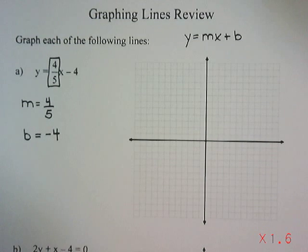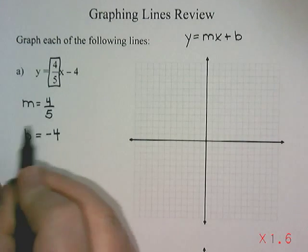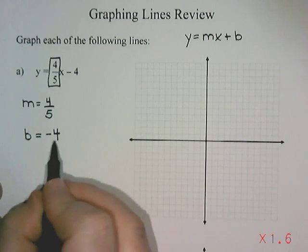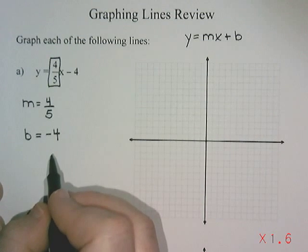So there are many different methods for graphing. You can use a table of values, you can use x and y-intercepts, but the one I like the best is using the slope and the y-intercept to find some points on the graph and then draw your line. So when you're graphing, the first thing you want to do is start with your y-intercept, so that negative 4. So the y-intercept is where the line crosses the y-axis.